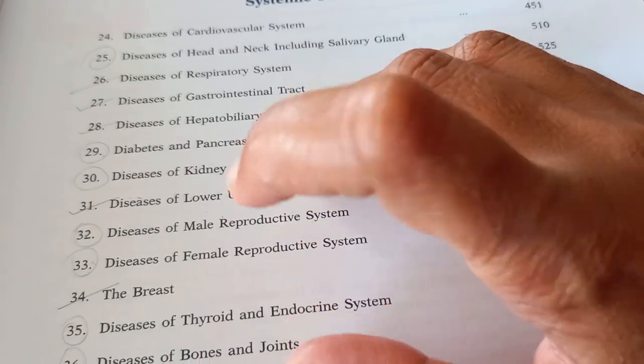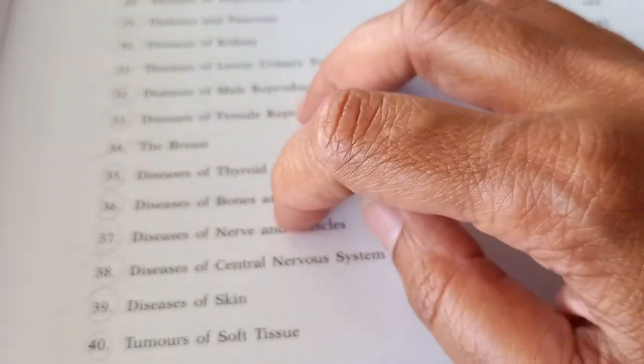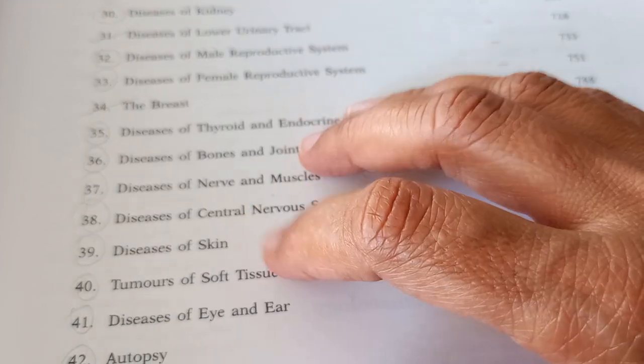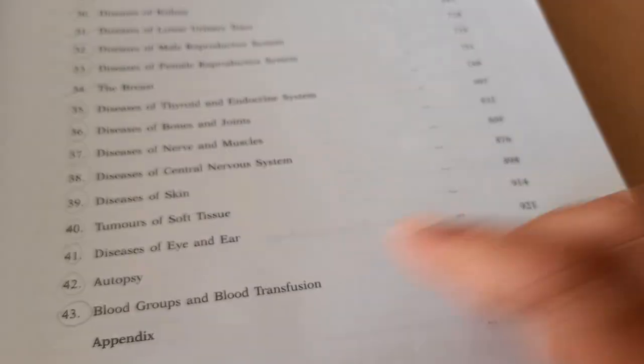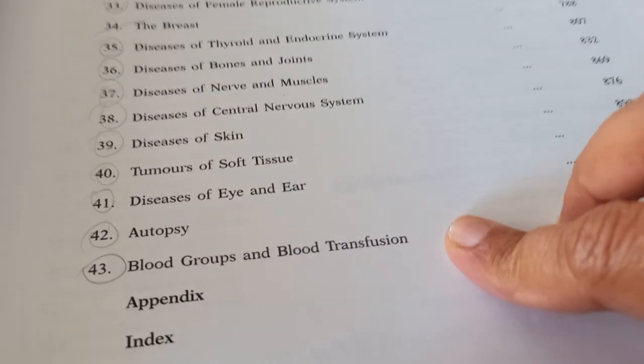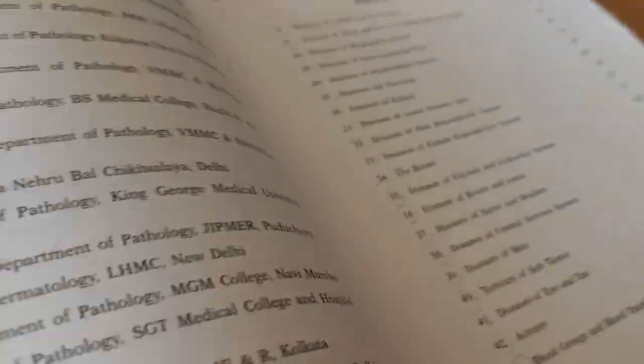Then male reproductive system, female reproduction, breast, thyroid, bones, nerves, CNS, skin, soft tissue, eye and ear. And autopsy also. Pathological autopsy. They are talking about gross specimen of something.